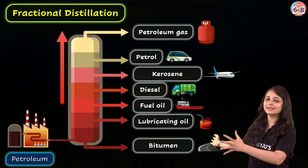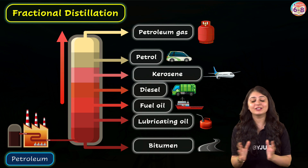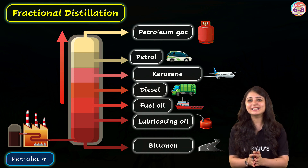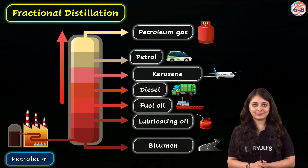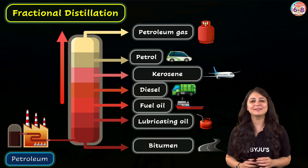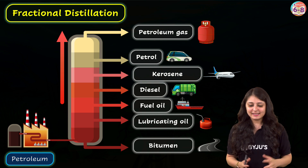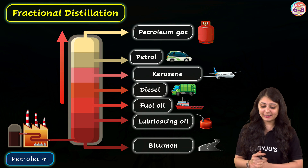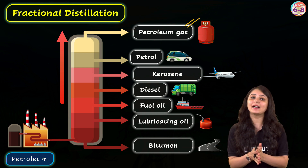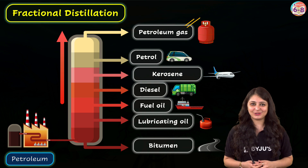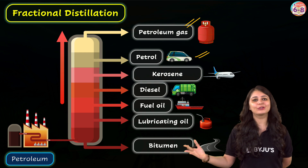The key principle behind fractional distillation is the difference in boiling points of the various hydrocarbons involved. Now let's look at the various fractions we get. First, we have LPG — liquefied petroleum gas — which is basically used as a fuel for home and industry.